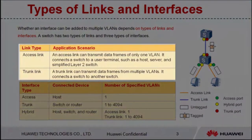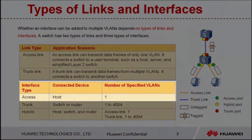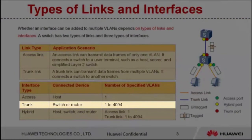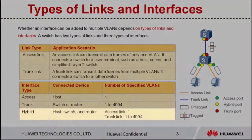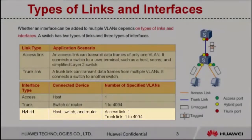An access link allows packets from only one VLAN to pass through, whereas a trunk link allows packets from multiple VLANs to pass through. Therefore, only one VLAN can be specified on an access interface, while 1 to 4094 VLANs can be specified on a trunk interface. Only one VLAN can be specified on a hybrid interface when it connects to a host, and multiple VLANs can be specified on a hybrid interface when it connects to a switch.